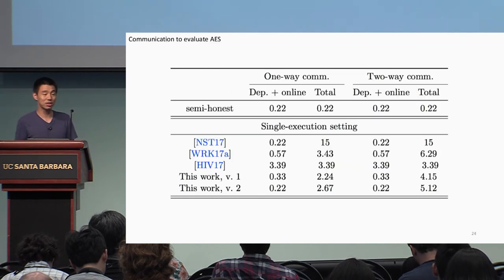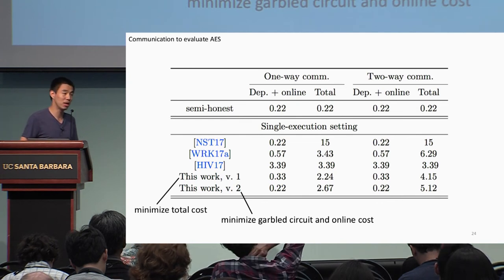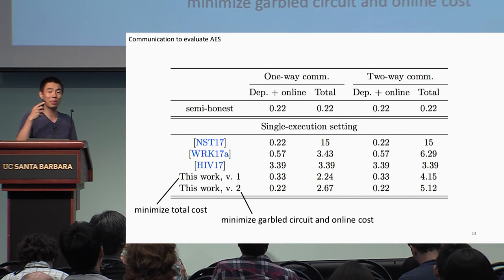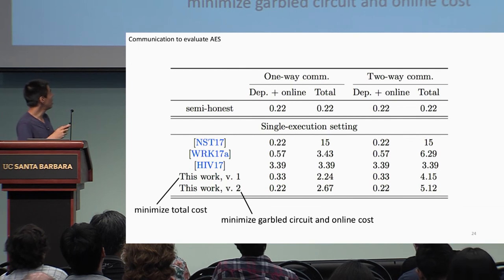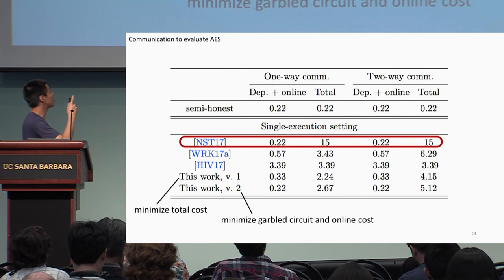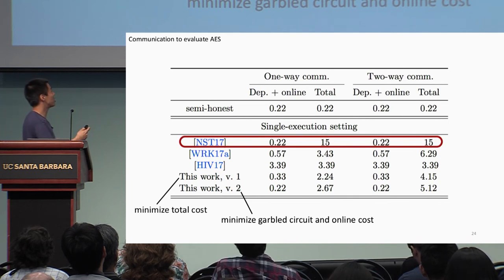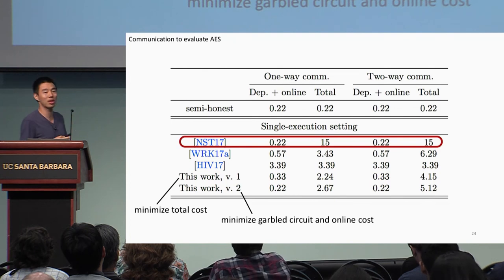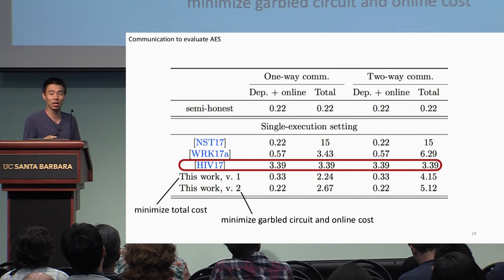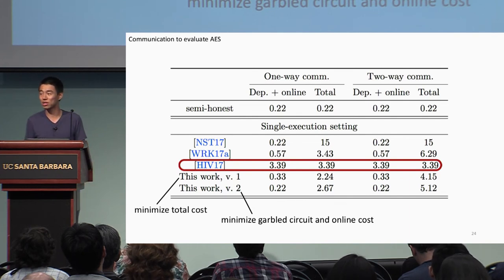Because of all these optimizations, our protocol comes in two versions. The first minimizes total cost across all stages. The second minimizes the function-dependent and online phases without including the function-independent phase. Compared with the one prior work in the malicious setting that achieves the same function-dependent phase cost as semi-honest — a work from NDSS last year — we achieve the same function-dependent and online cost with a total cost roughly four to five times smaller. And compared with the best previous result in terms of total communication, we can push most computation to the function-independent phase without substantially increasing total cost.